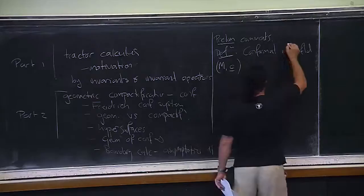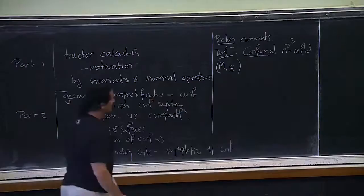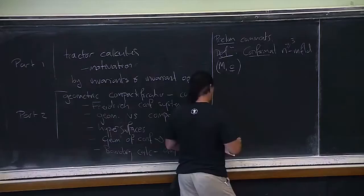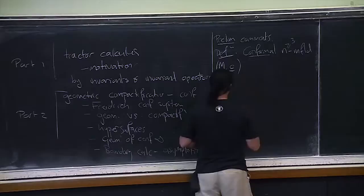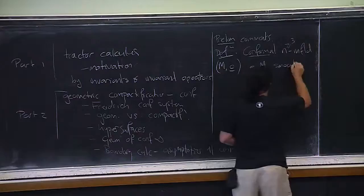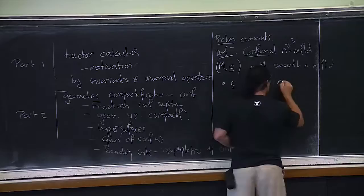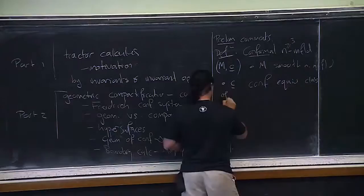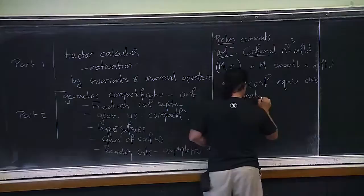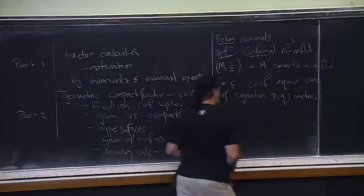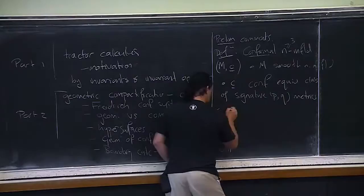I'll write an N-manifold like this. When I'm talking about conformal geometry, I'll usually assume that N is at least 3, just because things are different when the dimension is 2. Here M is just a smooth manifold, and C is your conformal structure. What C is, is an equivalence class — a conformal equivalence class of signature (p,q) metrics — so everything will apply in any signature.